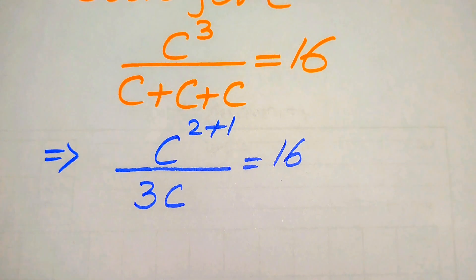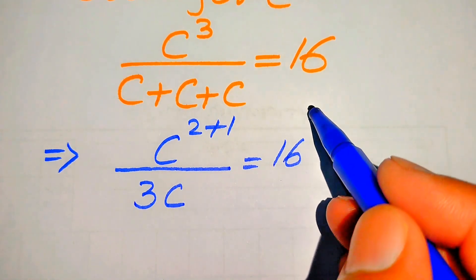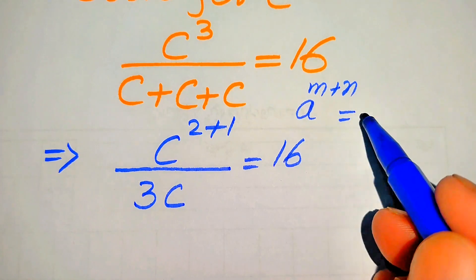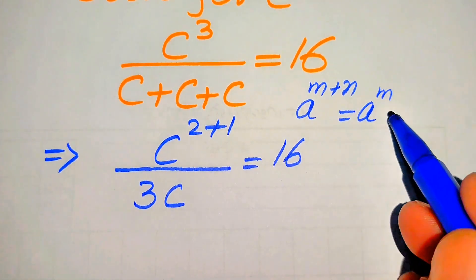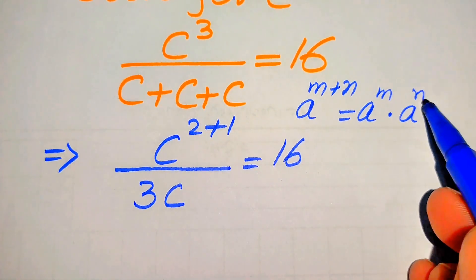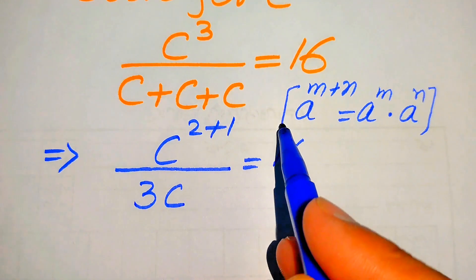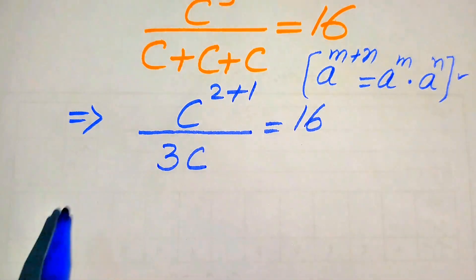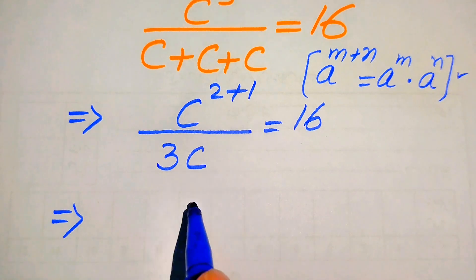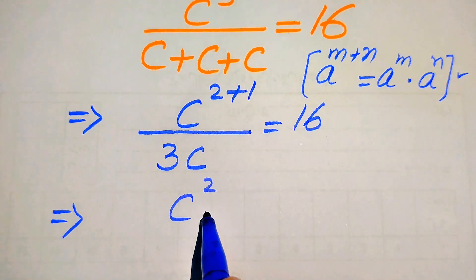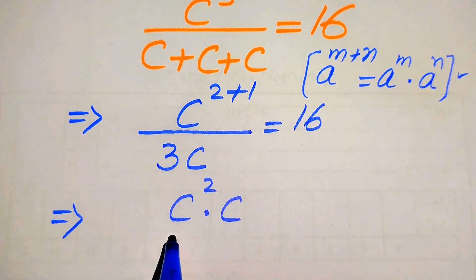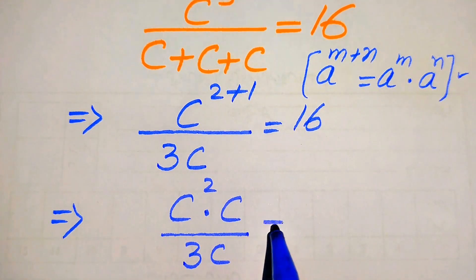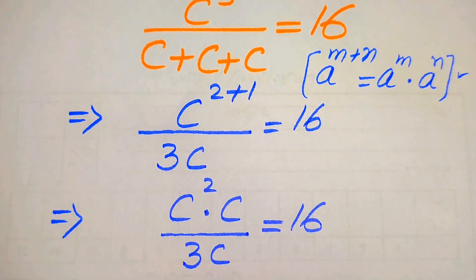Further, in the next step we need to use the exponent law: if we have a to the power of m plus n, it equals a to the power of m multiplied by a to the power of n. According to this exponent law, we break the exponent of these terms and it will be written as c squared multiplied by c, divided by 3 times of c, equals 16.